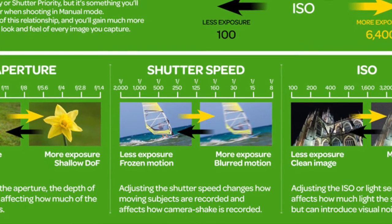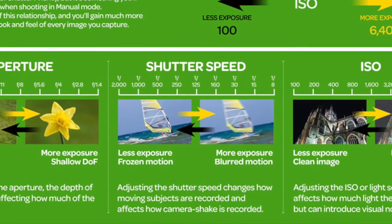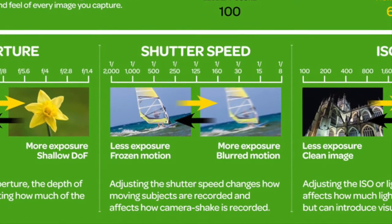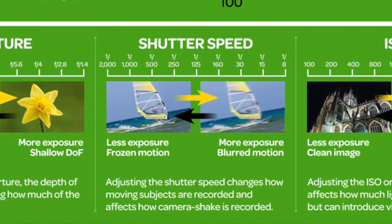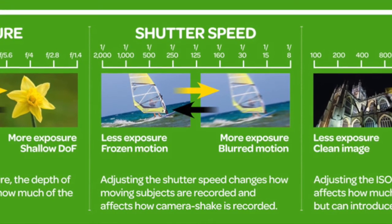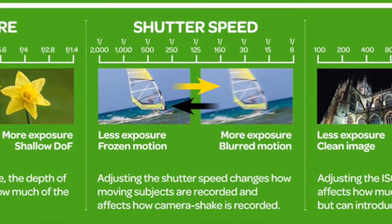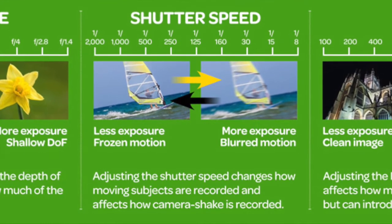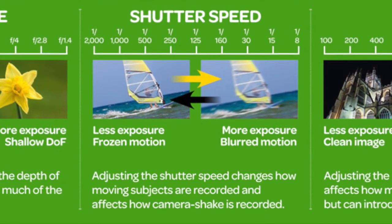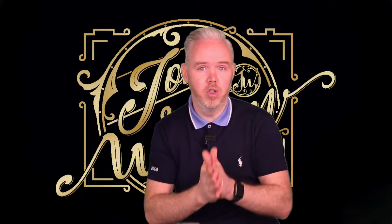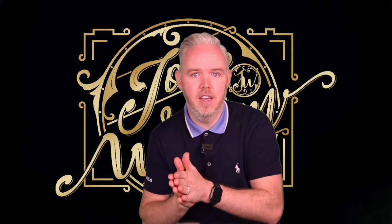With a fast shutter speed — for example, if you have a fast-moving object like a car going past that you want to be really sharp in your image — you would use a fast shutter speed. But at the same time, the fast shutter speed is also going to make your picture darker, because the shutter opens and closes really fast so not a lot of light gets in.